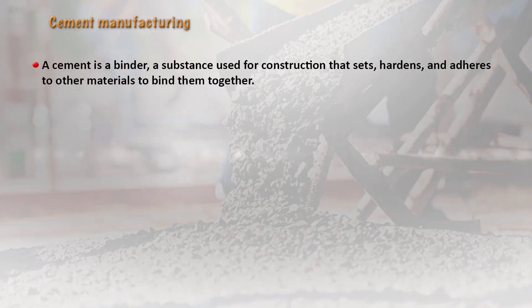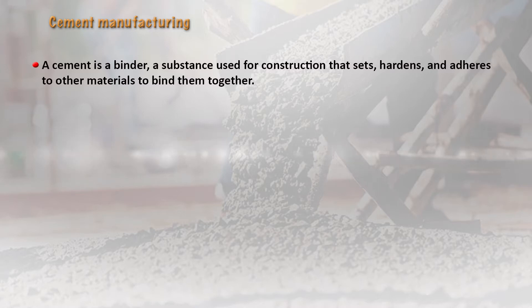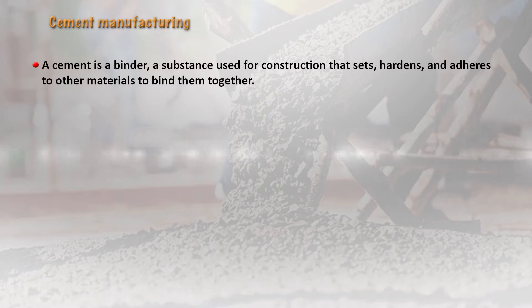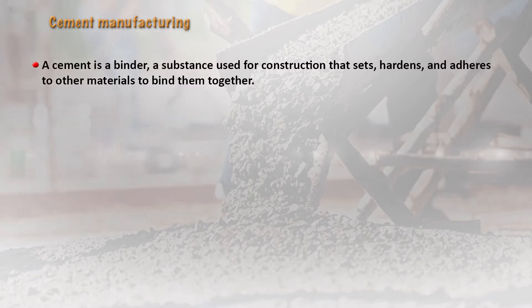Cement is essentially a binder — a substance used for construction that can set, harden, and adhere to other materials to bind them together. In construction, a little red soil or clay material, gravel, and cement are mixed together, sometimes with binding agents like fevicol powder. These are mixed with water to the right consistency so they can hold the blocks or bricks together, bound in between with cement plastering material.